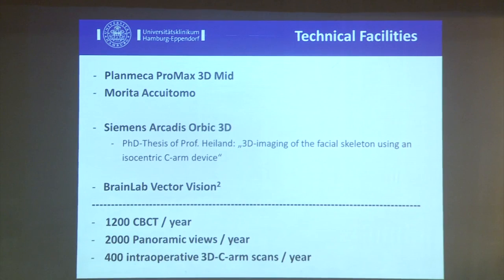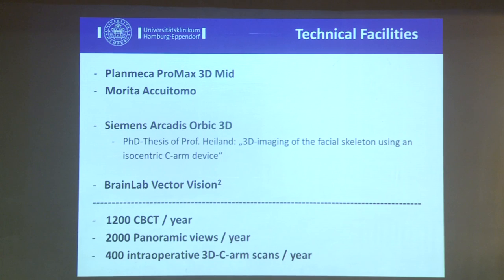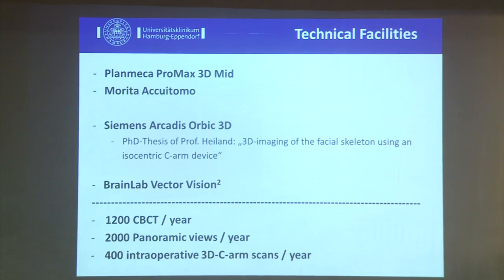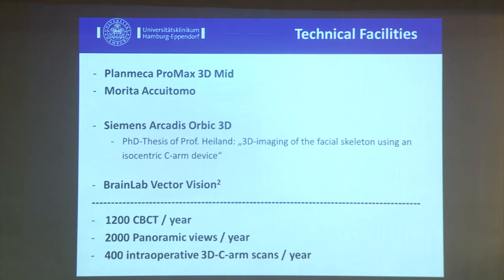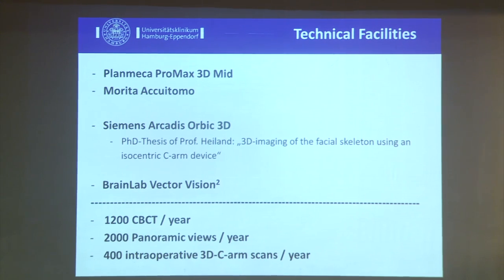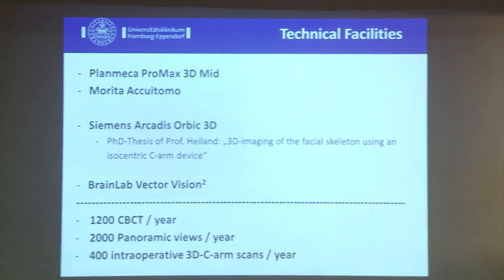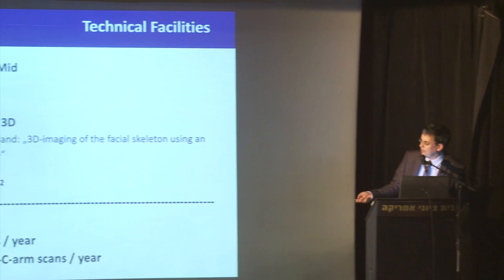Until now we are doing more than 2,000 panoramic views. Maybe when ultra-low-dose protocols are available in Germany, we will change here a little bit. But the cone beam scans are not covered by general health insurance in Germany, whereas panoramic views and CT scans are. This is a political discussion with radiologists — in Germany we do cone beams ourselves, and CTs are done by the radiologists. At the moment, cone beam is private and has to be paid by the patient, while panoramic and CT are reimbursed by general health insurance.